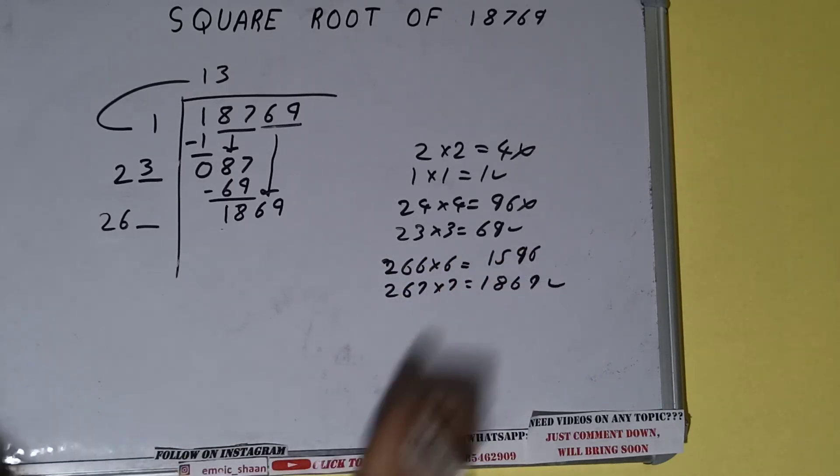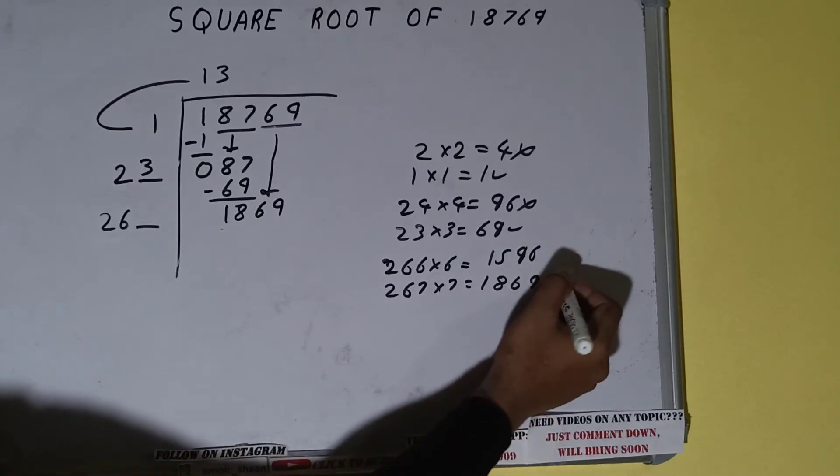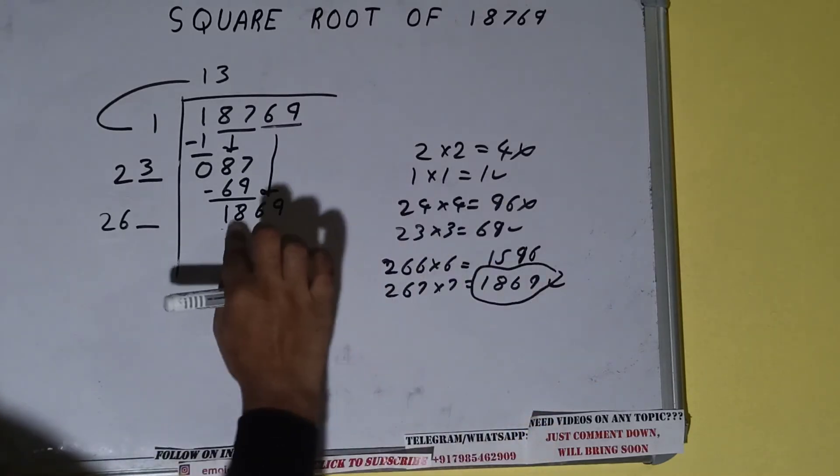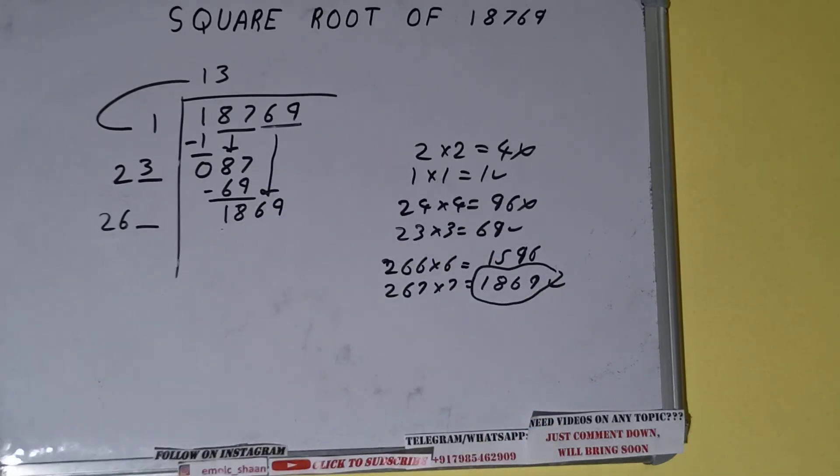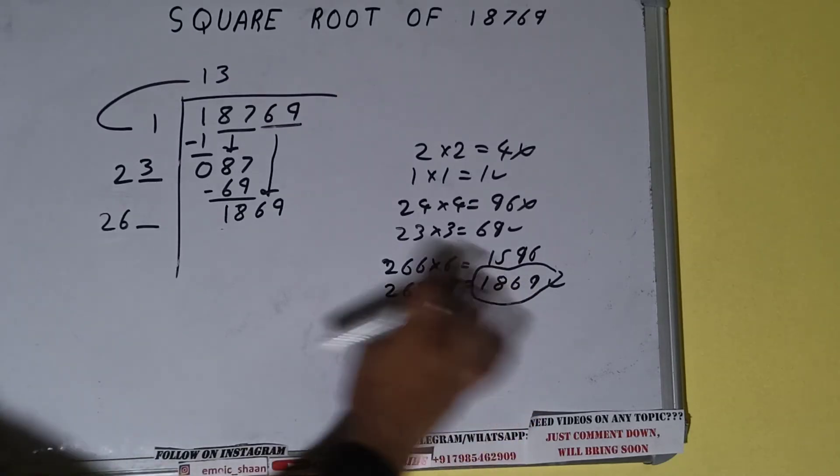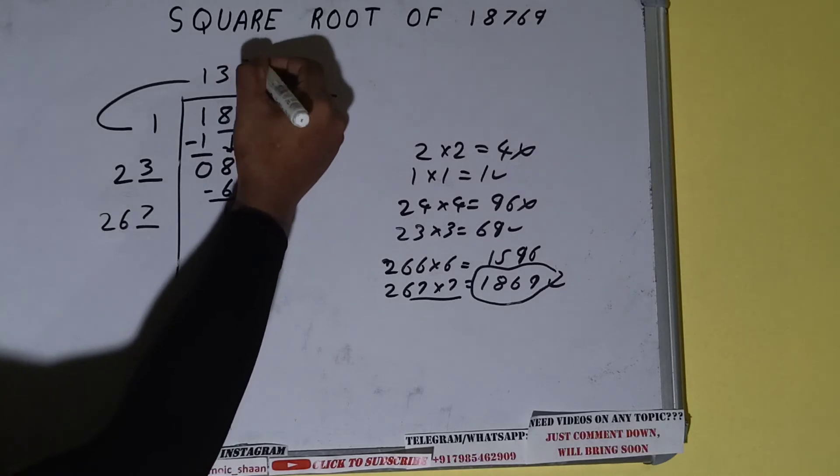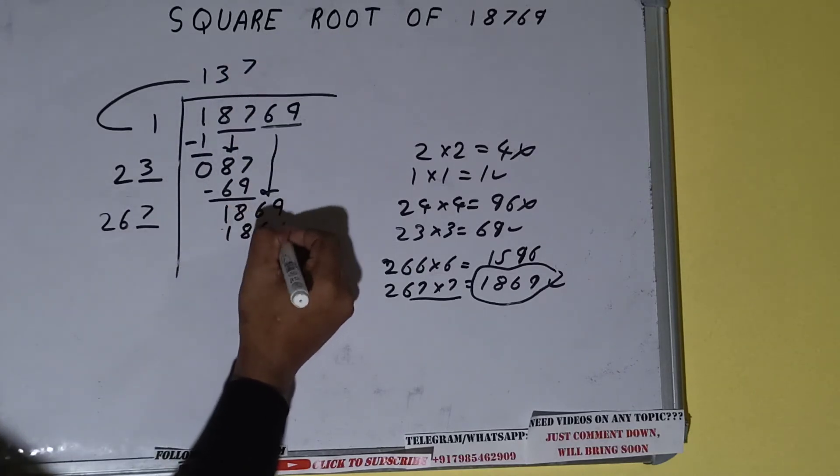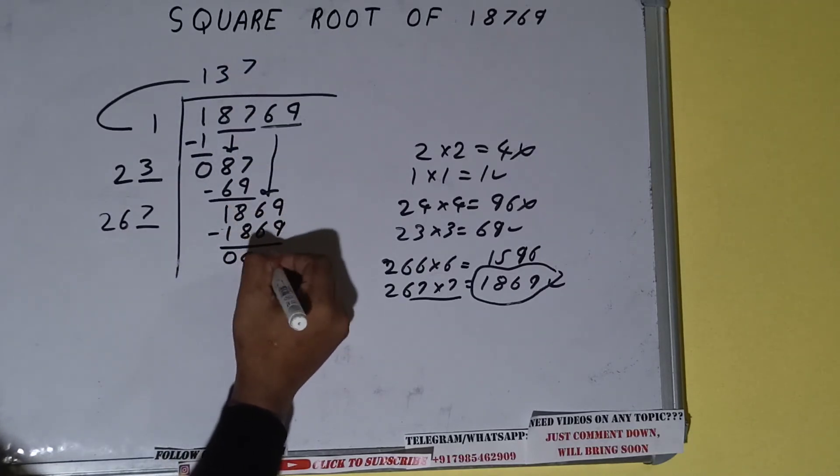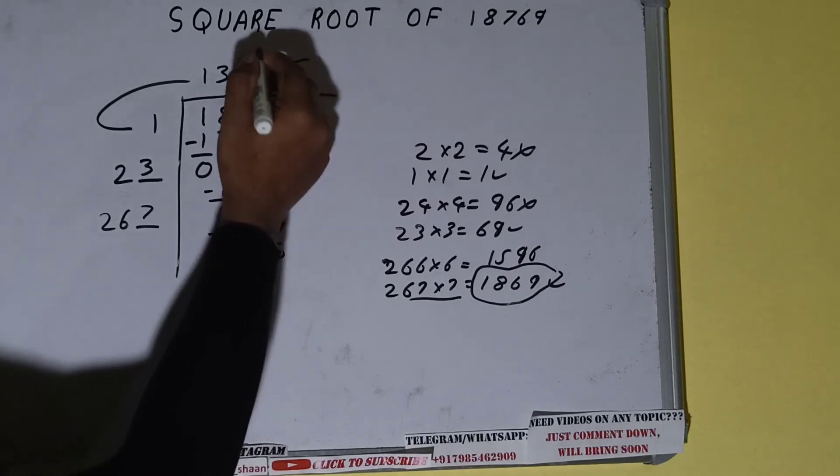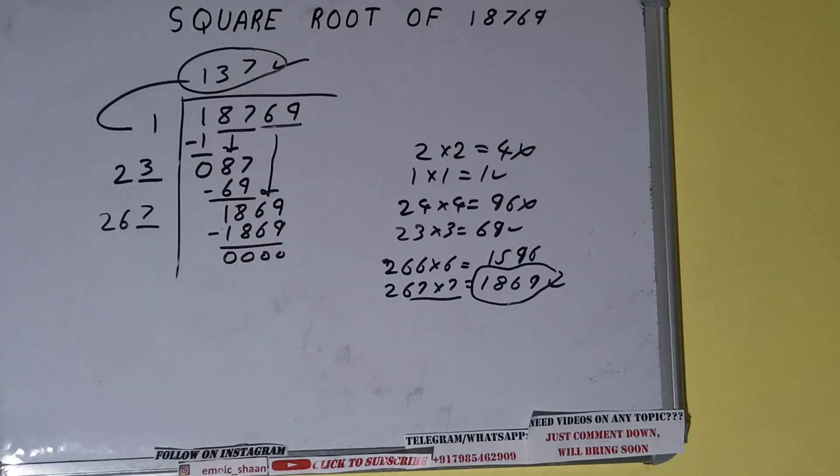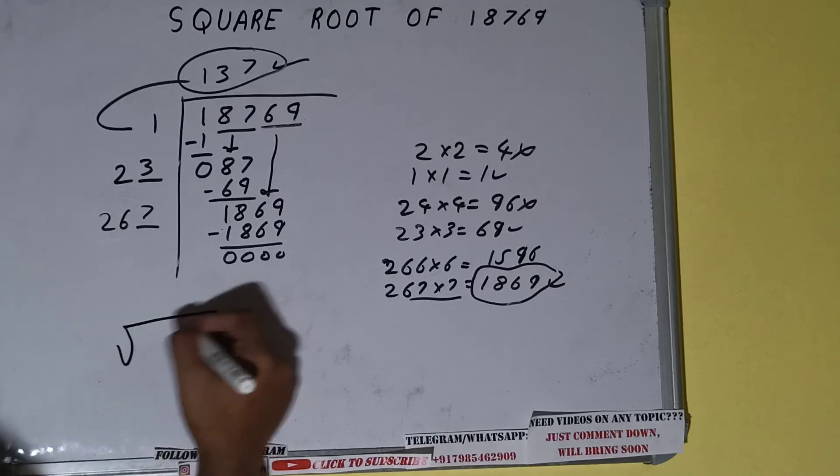Okay, if this number was greater than this number, then we would have taken this, but we have got a number that is equal to this number, so we can take this 7. So 7 here and 7 here, 1869 subtract, and we will be left with 0. Once we are left with 0, whatever is in the quotient will be the answer, that is 137.